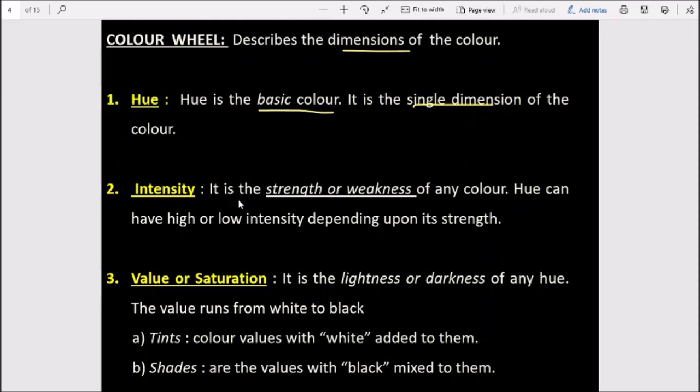Second is intensity. When we depict the strength or weakness of any color, that is intensity. It can have high intensity or low intensity depending upon its strength. For example, if we increase the intensity of pink to high, it starts depicting a maroon shade. Similarly, if we lower the intensity of bright pink, it becomes lighter pink.